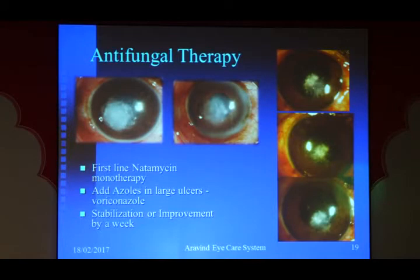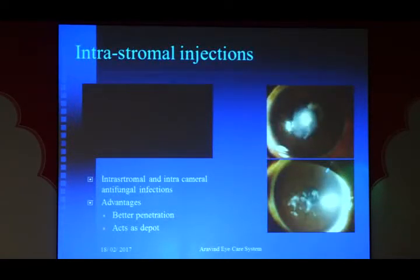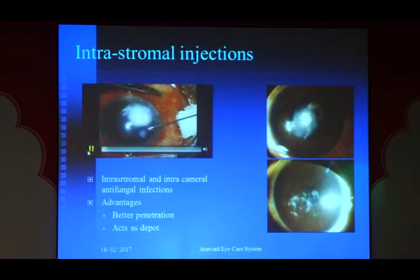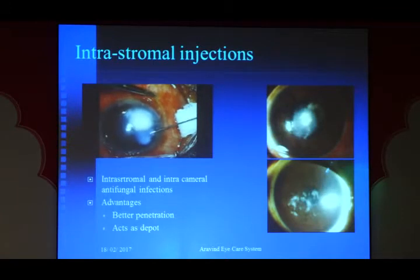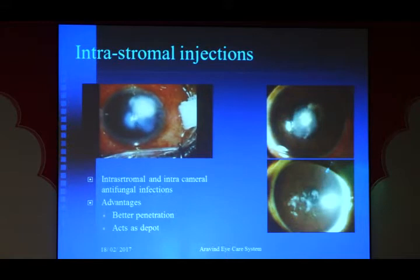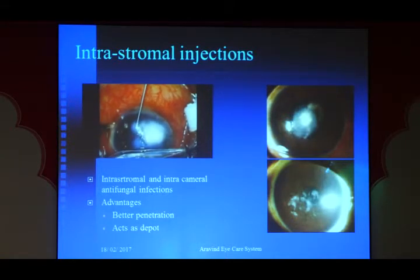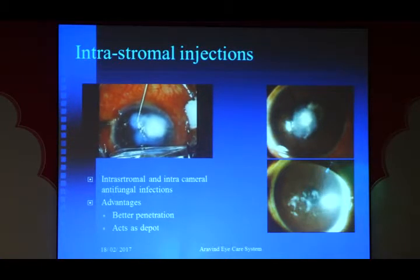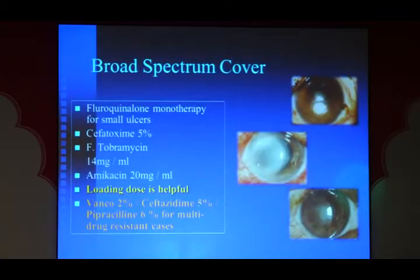For empirical therapy when fungal infection is strongly suspected, natamycin as first-line monotherapy or combined with an azole is recommended. Assess response at one week and proceed accordingly. For deeper and more severe infections, intrastromal injections of voriconazole can be considered. In fungal, Acanthamoeba, or Nocardia infections, an immediate response cannot be expected, so if improvement is not seen within a week, do not panic — as long as there are signs of healing, continue treatment.